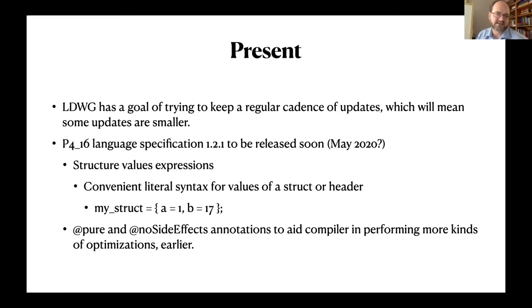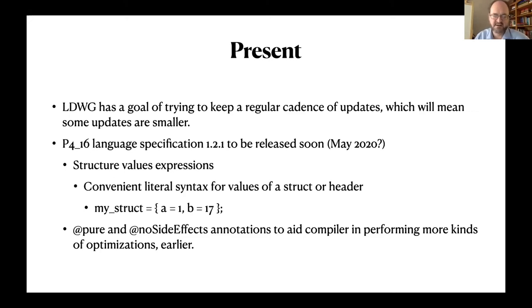As part of this faster cadence, the last release was last October and the next one will be late this month — either shortly before May or probably during May — numbered 1.2.1. The main addition is a literal syntax to make it nicer to assign values to structs with field name equals value pairs, plus a couple of annotations that mark extern functions or methods as pure with no side effects, helping the compiler front end do reordering or elimination optimization tricks.